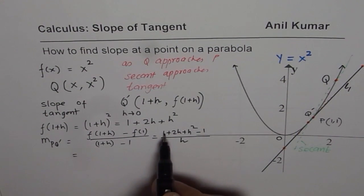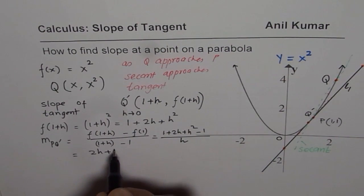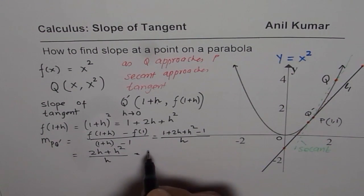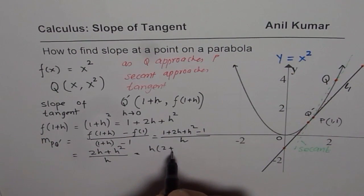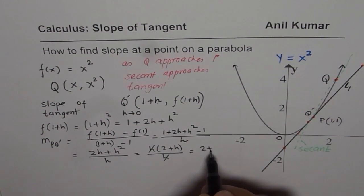So that gives us 1 minus 1 is 0. You are left with 2H plus H square. So we have 2H plus H square divided by H. You can take H common, so we get H common, 2 plus H, over H. Now, canceling it, we are left with 2 plus H.